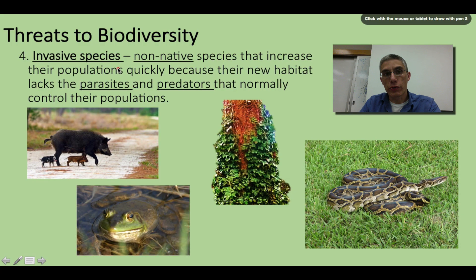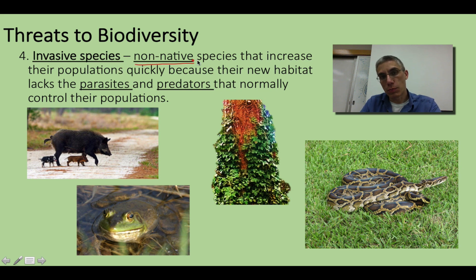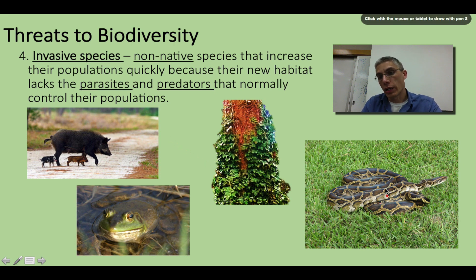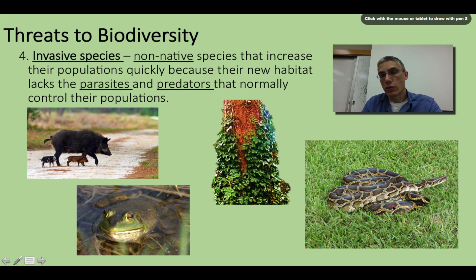Invasive species is another threat to biodiversity. An invasive species is typically a non-native species to an area, and unfortunately when they establish themselves, their populations can increase really rapidly because they don't typically have any natural predators or parasites to keep their populations in check. For example, in Florida and some of the southern states, reptiles introduced into the wild — whether intentionally or by accident — have started to multiply and are having a very detrimental effect on the various small mammal populations in that area.